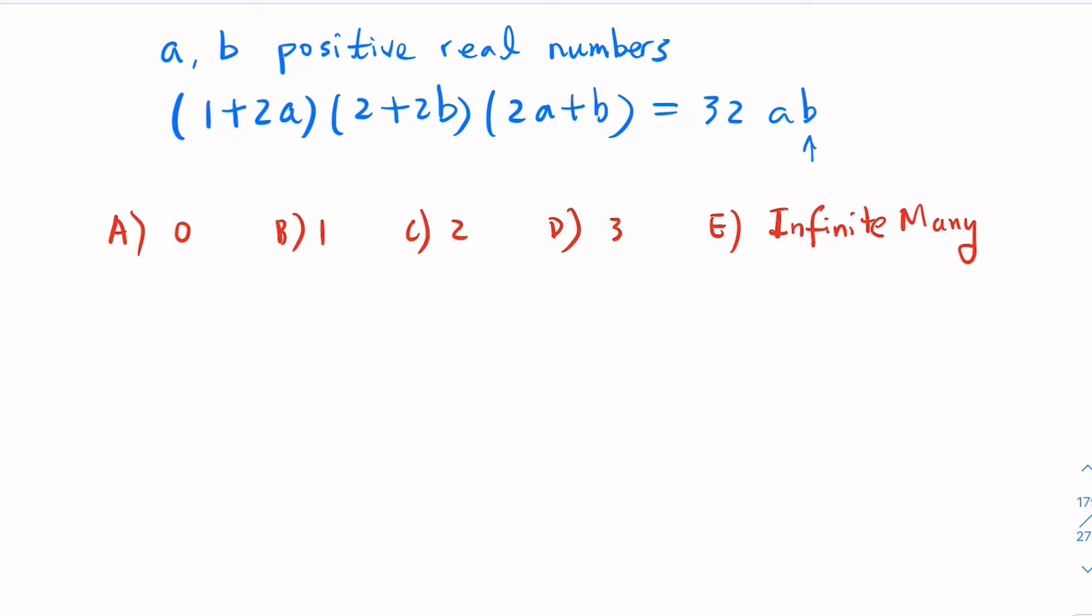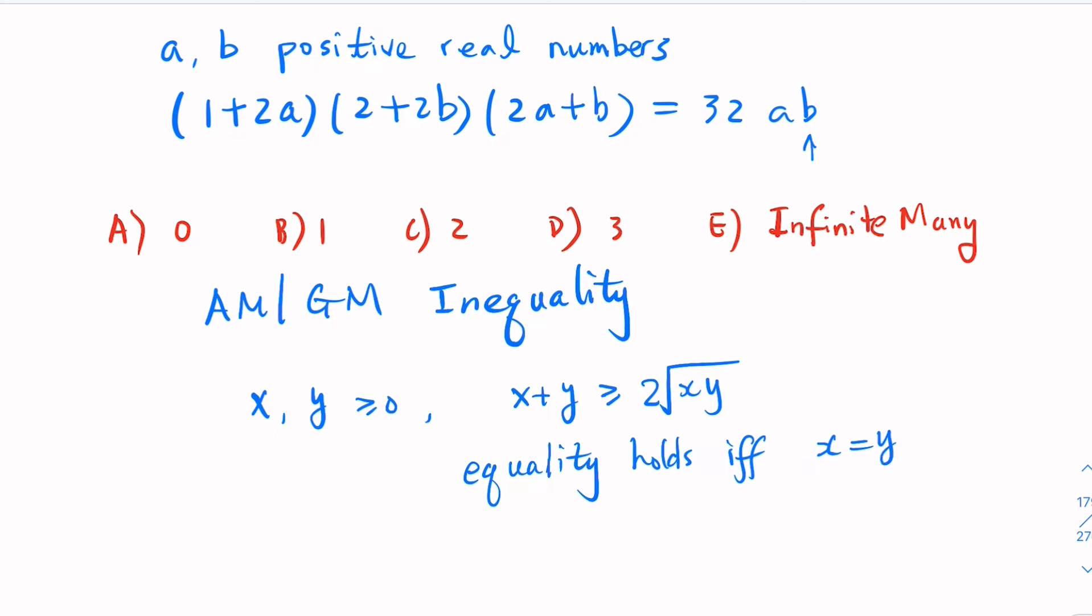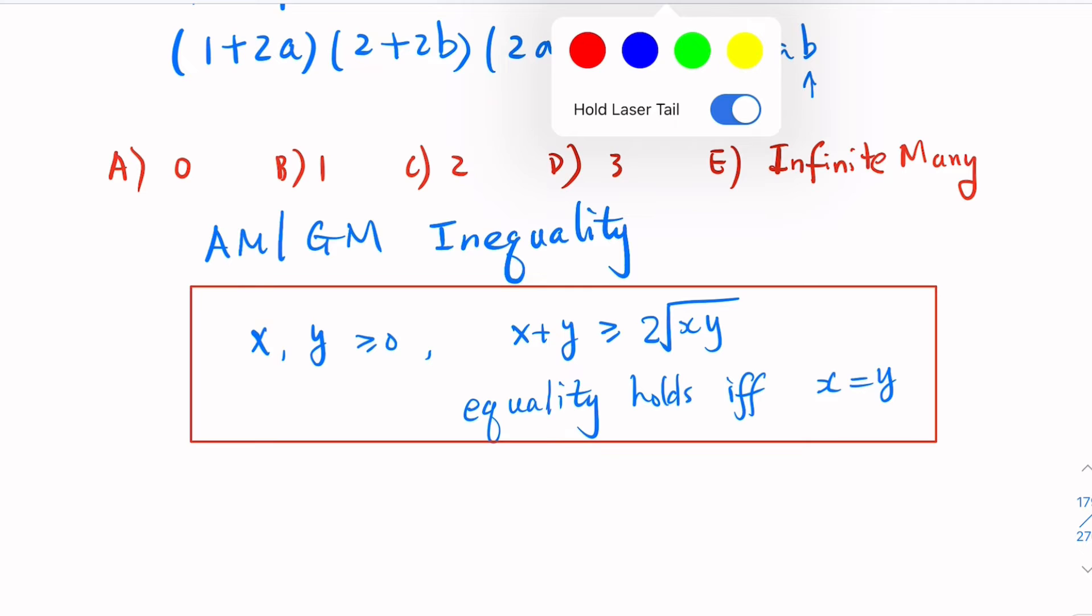What we will do here is actually use AM-GM inequality. For X and Y greater than or equal to 0, we have X + Y ≥ 2√(XY).